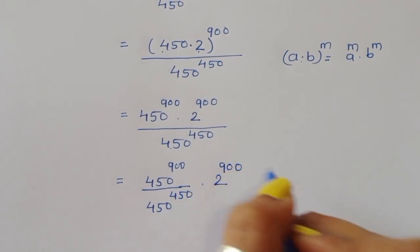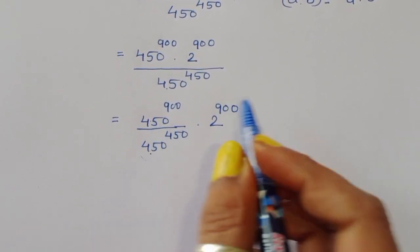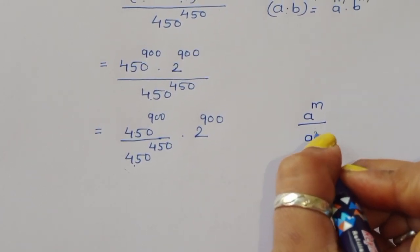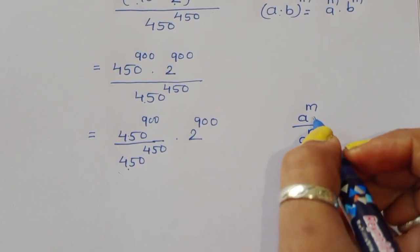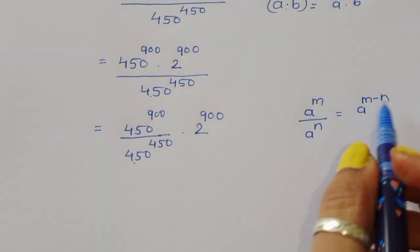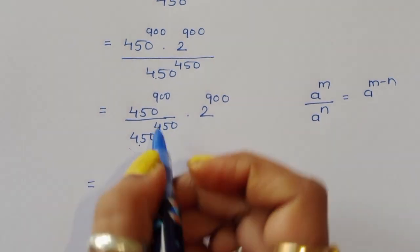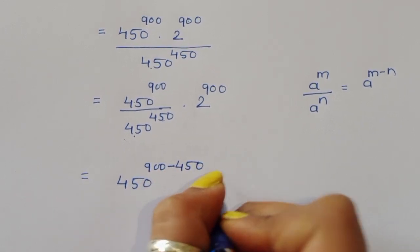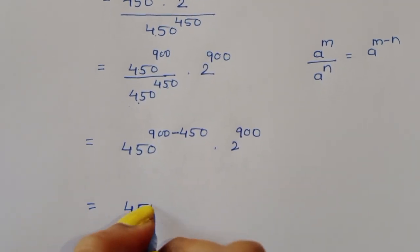Now you can see 450 appears in both numerator and denominator, but with different powers. We know the formula: a^m divided by a^n equals a^(m-n), where the base is the same but the powers are different. Using this formula, we can write 450^(900 - 450), times 2^900.